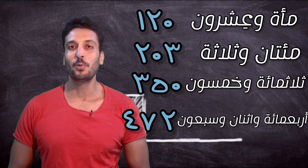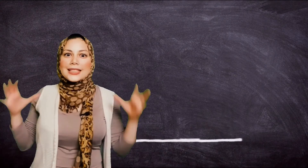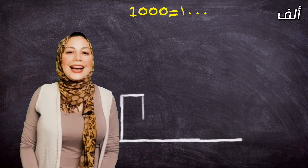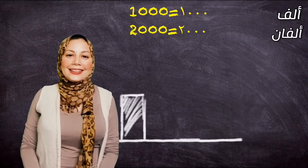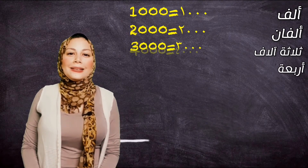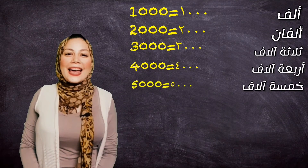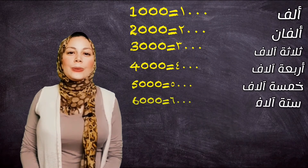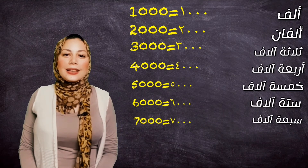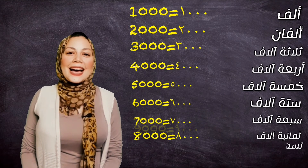And now the numbers from 1000 to 10,000: 1000, 1300, 1200, 1500, 1600, 1700, 1800, 1900.